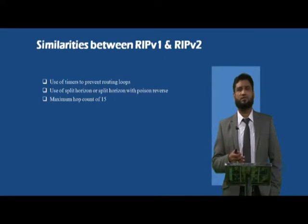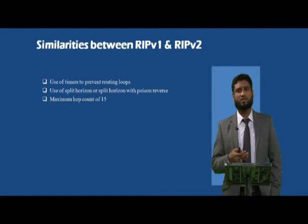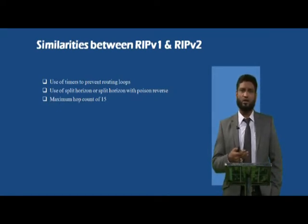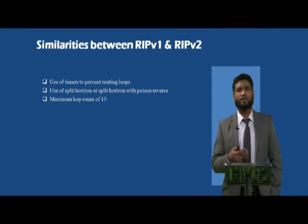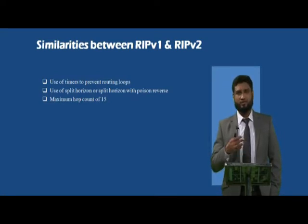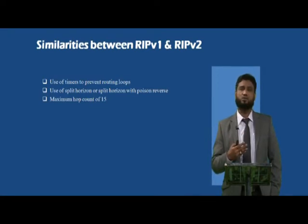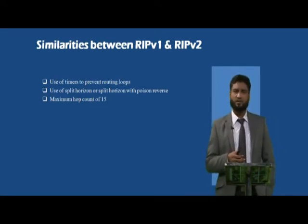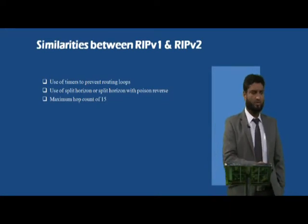Both RIP version 1 and RIP version 2 use 15 hops as the maximum metric. This 15-hop limit applies to both versions — any hop count of 16 or more is considered invalid and is automatically deleted from the routing table. These parameters are the same for both RIP version 1 and RIP version 2.